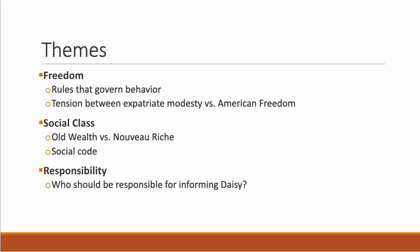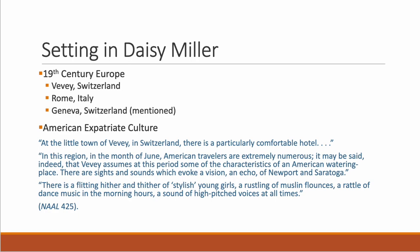Three of the big themes in Daisy Miller are freedom — especially as pertaining to rules that govern behavior in society and the tensions between expatriate modesty and American freedom — social class, which is hugely important to realist writers, and responsibility. Pay attention to issues of old wealth versus the nouveau riche, who has knowledge of the social codes, and who is able to maneuver within those codes. The story also seems to ask who should be responsible for informing Daisy that she is out of line and possibly in danger.